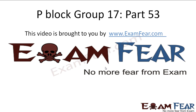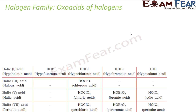Hello friends, this video on p-blog part 53 is brought to you by examfia.com — no more fear from exams. The next topic we will discuss is oxa acids of halogens. Oxa acids means they have hydrogen, they have oxygen, and they have a halogen.